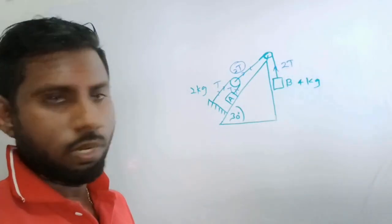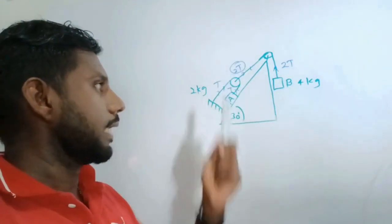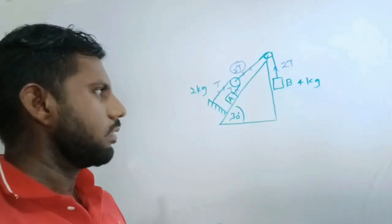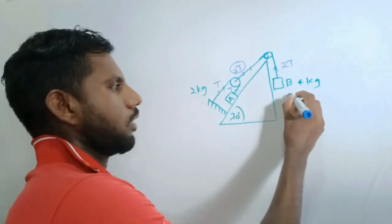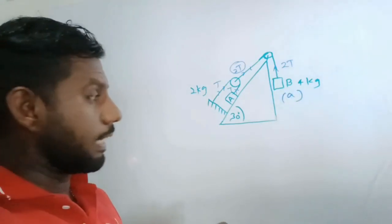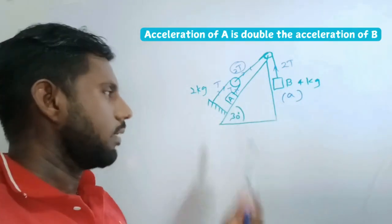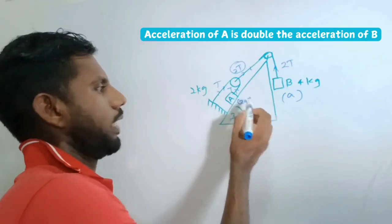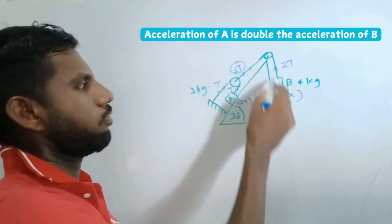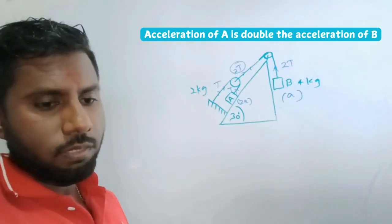Rather than doing the normal procedure, we know the acceleration. If we take the acceleration of mass B as a, remember the acceleration of A is double the value, so it's 2a. Remember that in this kind of combination. Now the normal procedure - what you have to do is